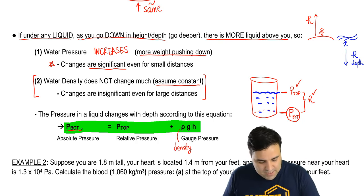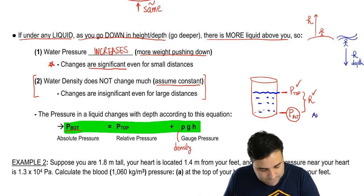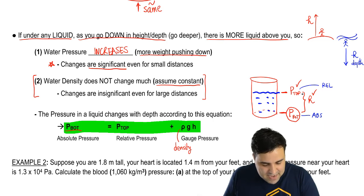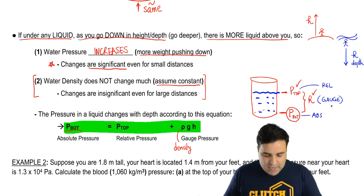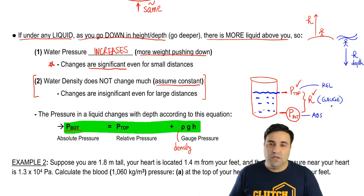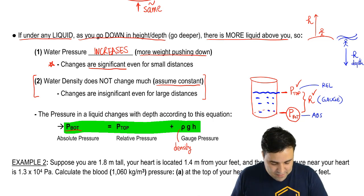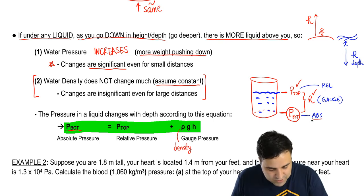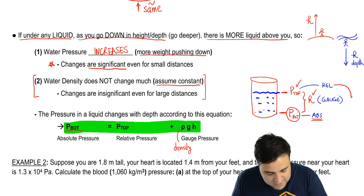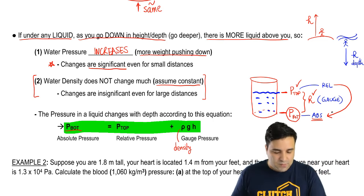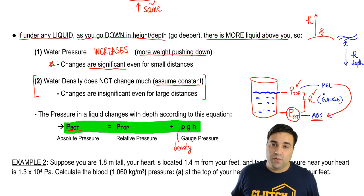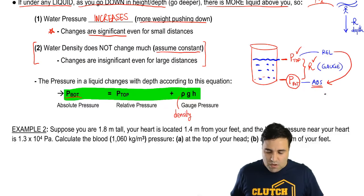You should know that the pressure at the bottom is called the absolute pressure, the pressure at the top is called the relative pressure, and the pressure difference between the two is called the gauge pressure. Gauge pressure is the difference between the two pressures — how much greater one is than the other. The pressure at the bottom is relative to the top pressure, which is why the top is called relative. You may see questions that throw these terms at you, so you should know what they are.